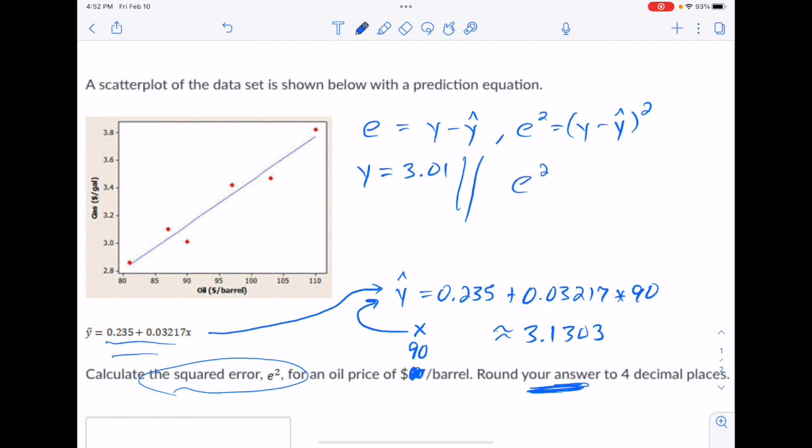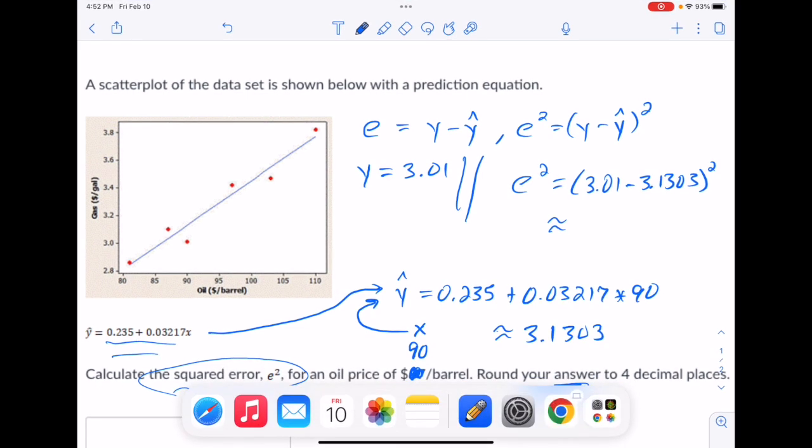So E squared is Y, 3.01, minus Y hat, 3.1303, all squared. And that's going to be our answer. So that's the one we're going to round to three decimal places. So jumping back over to the calculator real quick.